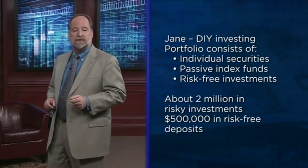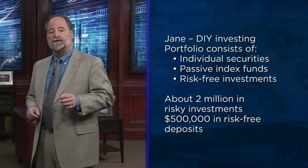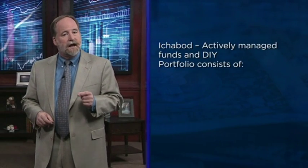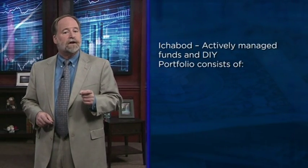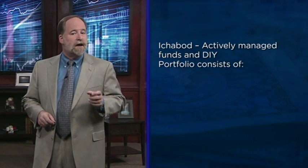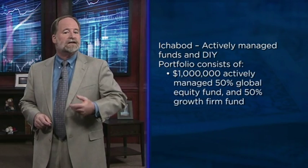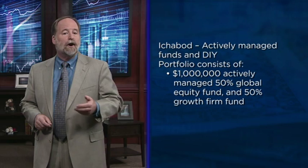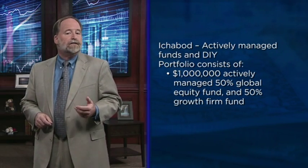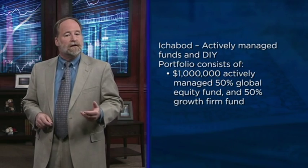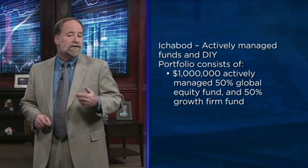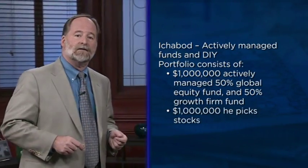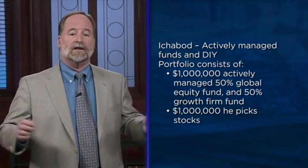In contrast, consider Ichabod's situation. Ichabod also has about $2 million in risky investments and $500,000 in risk-free deposits. However, he has allocated a significant portion of his investments to a couple of actively managed funds. About a million is evenly split between a global equity fund that invests in equity of mid-cap to large-cap non-US-based companies, and a fund that invests in growth firms that are fairly early stages of the life cycle and are still expanding operations into new markets. The rest of his million dollars he manages by picking stocks he thinks could really take off.